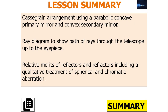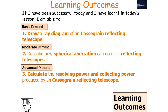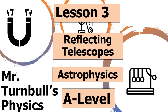To summarise: the Cassegrain arrangement uses a parabolic concave mirror and a convex secondary mirror. We can draw a ray diagram showing the paths of rays through the telescope up to the eyepiece, and we know the relative merits of reflectors and refractors including a qualitative treatment of spherical and chromatic aberration. We can draw a ray diagram of a Cassegrain reflecting telescope, describe how spherical aberration can occur in reflecting telescopes, and calculate the resolving power and collecting power. I hope you've enjoyed today's lesson on reflecting telescopes — have a lovely day.